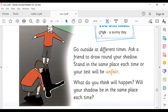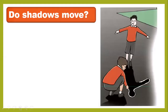For this activity you need a partner. Here is a shadow and here is a partner — the partner is drawing the shadow of this boy. You have to check the time. Do shadows move? Yes, shadows move because the Earth is moving around the sun.